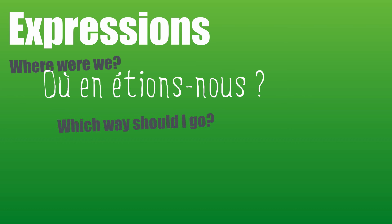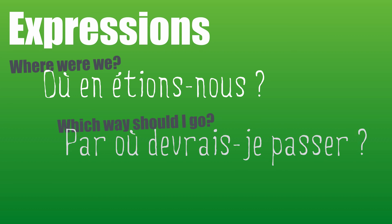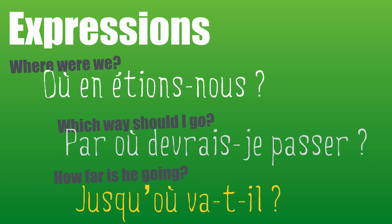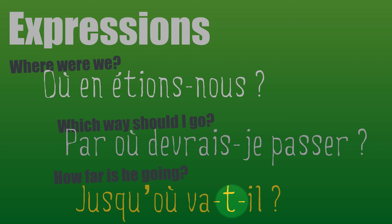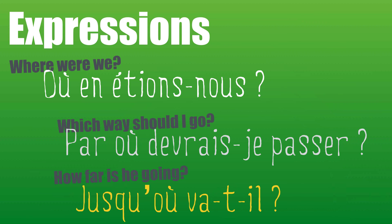Which way should I go? In this question in English there is no 'where', but in French we say: par où devrais-je passer? Par où devrais-je passer — which way should I go? How far is he going? How far is jusqu'où. Jusqu'où va-t-il? — how far is he going? Note that we need the euphonic T between the two vowels to improve pronunciation. So here are some useful expressions: 'which way' is par où, and 'how far' is jusqu'où.